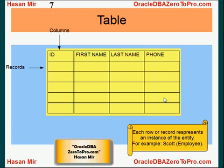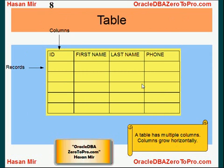Each row or record represents an instance of the entity. For example, if you have created a table employees, then each record will represent an employee in a company. For example, there would be a row for Scott, there would be another row for Larry. It's not going to be like you have half a row for Scott and the remaining half belongs to Larry — the whole record will be pointing to one instance of an employee.